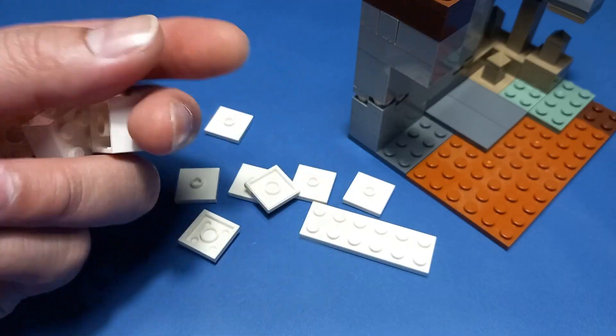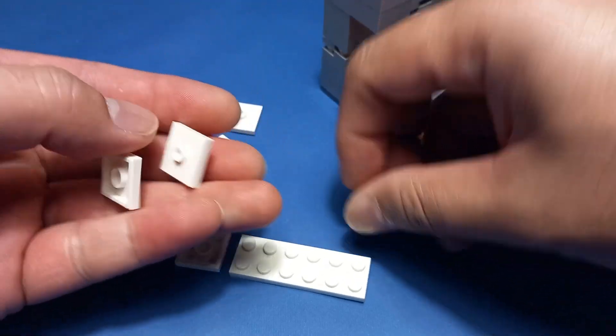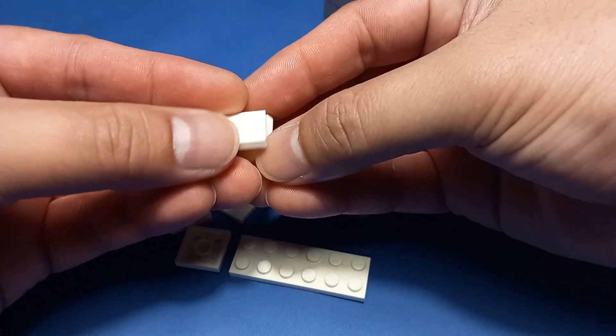The white brick is also very limited so stacking this white modified plate is the only way to create more white bricks.